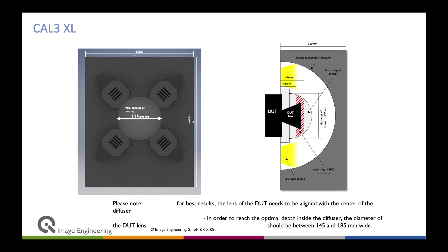The Cal 3 Extra Large has a 225 millimeter maximum opening, so you place your device under test right inside the diffuser to do the calibration. It's a very powerful tool used on many production lines around the world to calibrate fisheye lenses. Thanks a lot, and see you in other sessions.